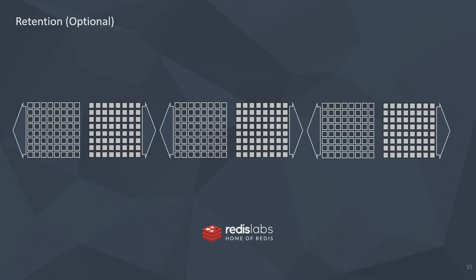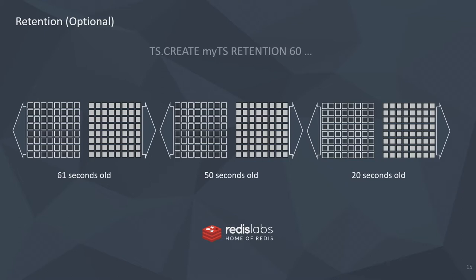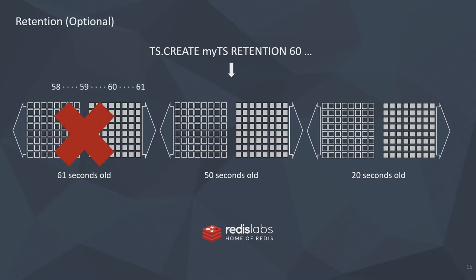The other thing you can do is set up a retention policy. This is really great if you don't care about data past a certain time. Let's say I don't want anything older than 60 seconds. You can put labels and retention together. So as 60 seconds goes along, we eliminate the chunk that has old data in it and no longer have to worry about it. This basically means not having to worry about completely uncapped data.